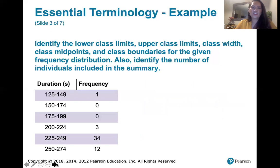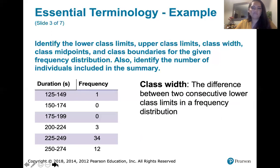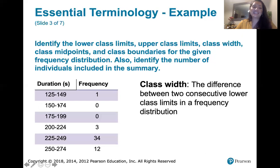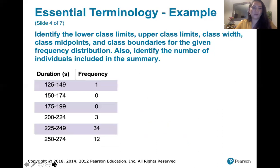Then we're asked for the class width. The class width is not the difference between an upper class limit and the lower class limit of the same class. It's the difference between two consecutive lower class limits in a frequency distribution. So I'm looking at 125 and 150 — the lower class limit for the first class and the lower class limit for the next class — and subtracting them. So the class width is 150 minus 125, which gives us a class width of 25.